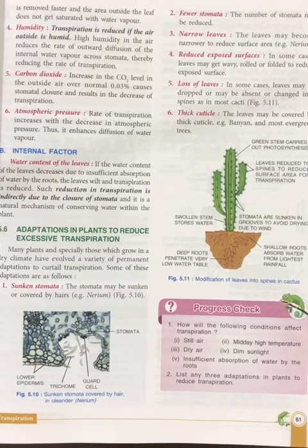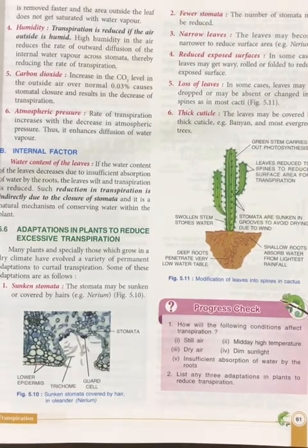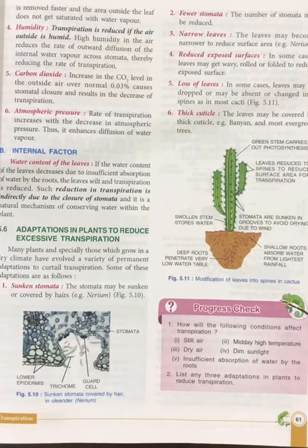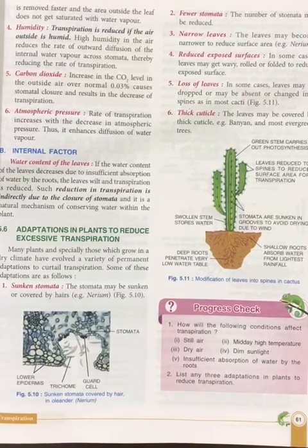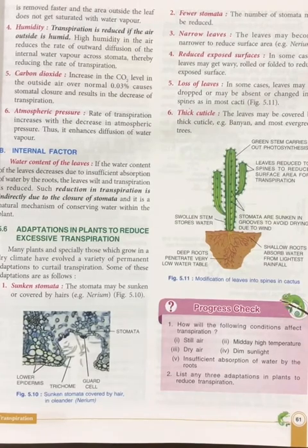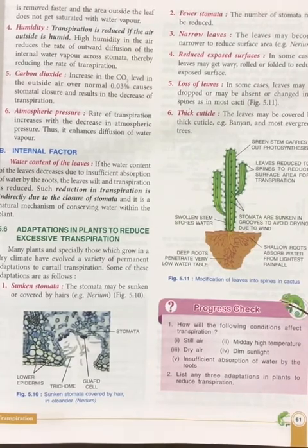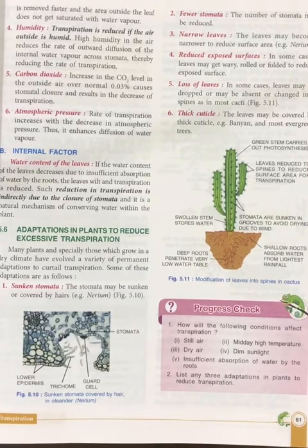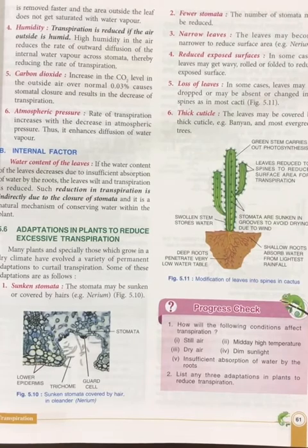Dim sunlight reduces the rate of transpiration because the stomata get partially closed. Insufficient absorption of water by the roots also results in partial closure of stomata or wilting of the leaves, which reduces the rate of transpiration.